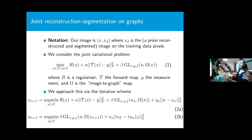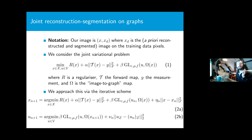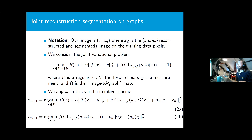Tying this together: how do we do joint reconstruction segmentation on graphs? A small notation change: x now represents just the non-training-data part of the image. We assume training data has been perfectly reconstructed and segmented — a classic example being that training data pixels are from a separate image already reconstructed and segmented, and we transfer that segmentation onto a new image to be reconstructed and segmented.